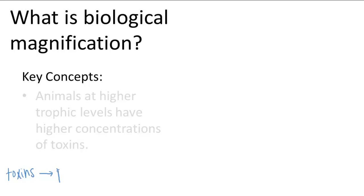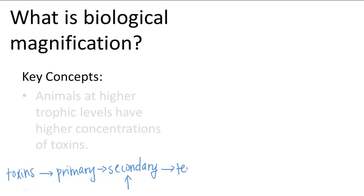If a primary consumer eats the toxins, and then the secondary consumer eats the primary consumer, the secondary consumer is eating the toxins as well. And because secondary consumers eat a lot of primary consumers, they end up having a higher concentration of toxins in their body than the primary consumer does. Now along comes a tertiary consumer, who eats the secondary consumer. As you move higher in the trophic levels, the toxins will build up to higher concentrations.